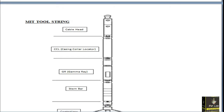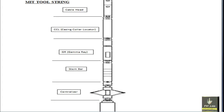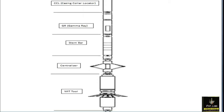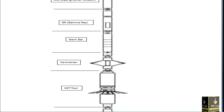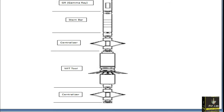Now let's look at the MIT tool string. The topmost part is the cable head, followed by CCL or gamma ray, then the stem bar, and centralizers. The centralizer is used to keep the tool in the center of the hole — if the tool goes to the side, this is not good for calibration. We normally use one centralizer. After the centralizer there is the MIT main tool which records our data, then another centralizer, and finally a bull plug.